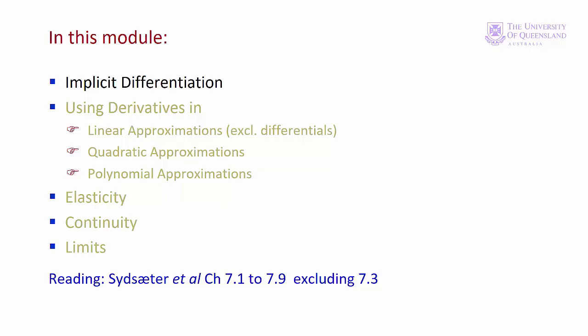In lecture 4 we studied the basics of differential calculus. In lecture 5 we'll see how we can use differentiation in a number of useful ways. In module 1 we'll apply the techniques of differentiation to implicit functions. In module 2 we'll use derivatives to find approximate values for more complex functions, starting with linear approximations and then increasingly precise techniques. In module 3 we'll examine elasticity from a mathematical perspective, and in module 4 we'll discuss continuity of functions and limits.